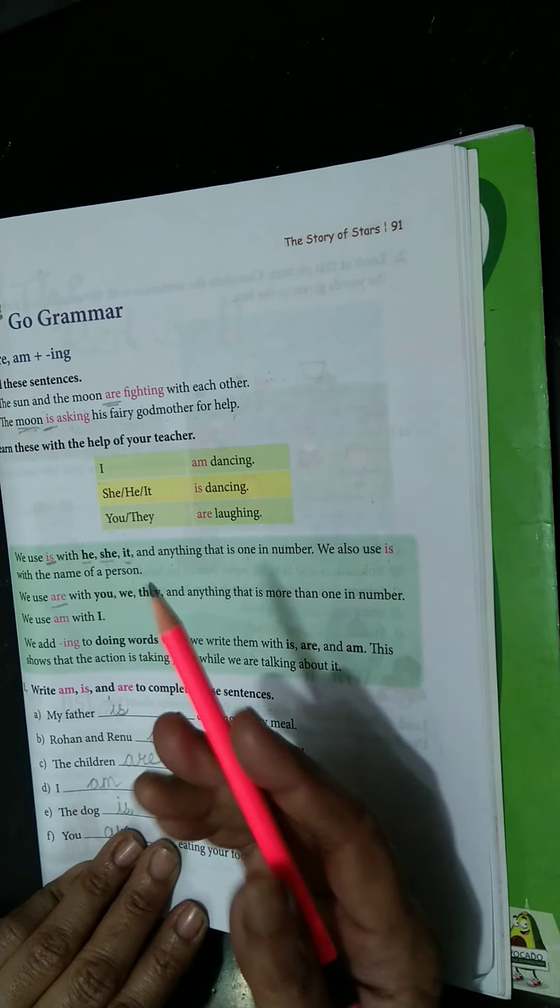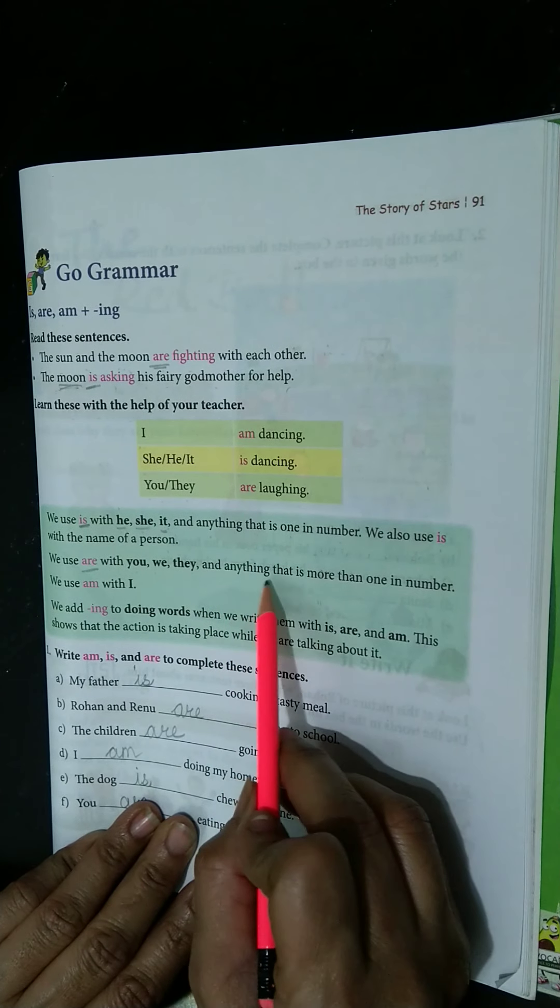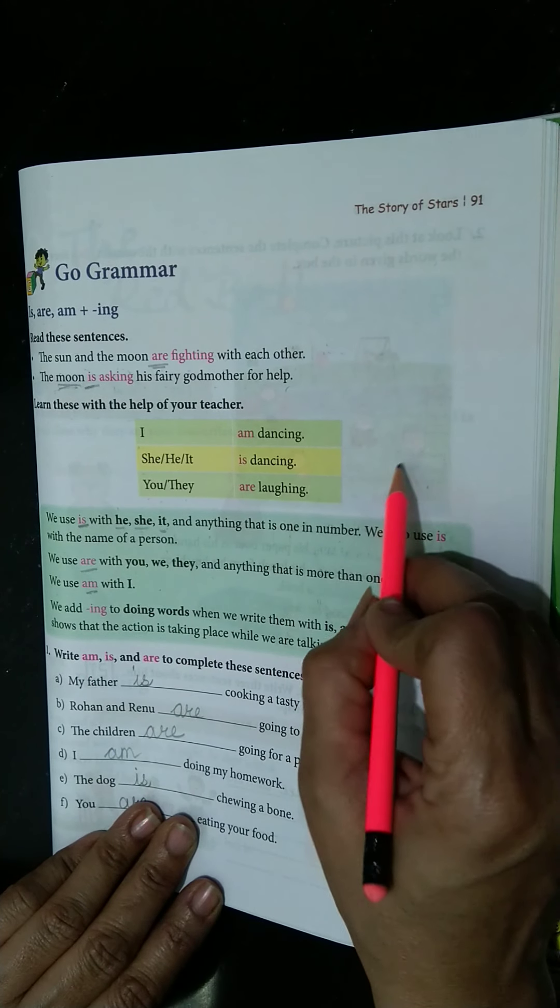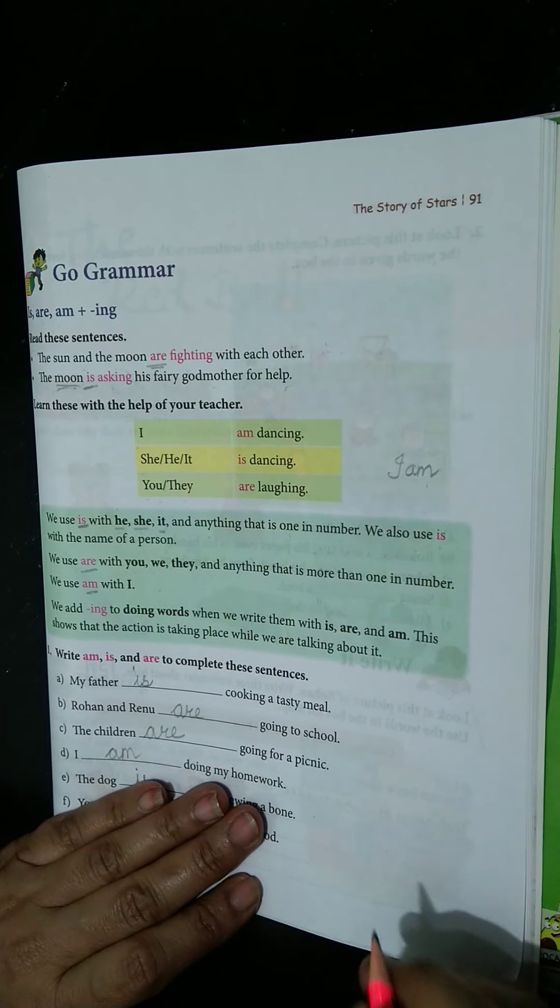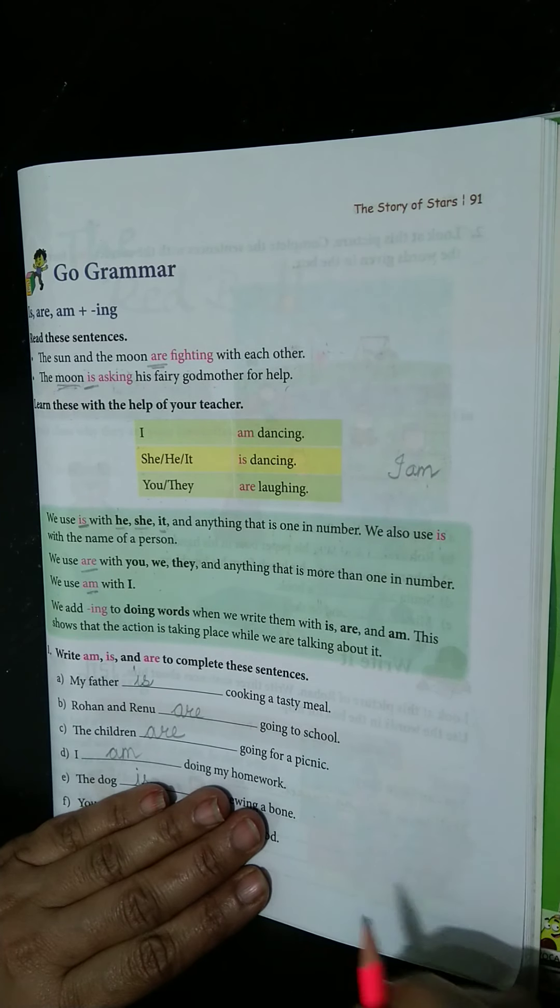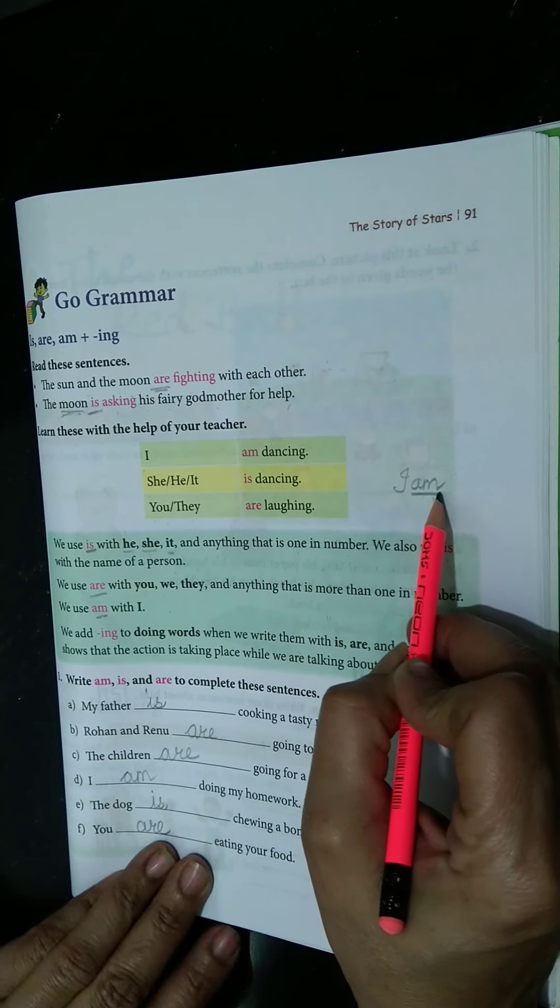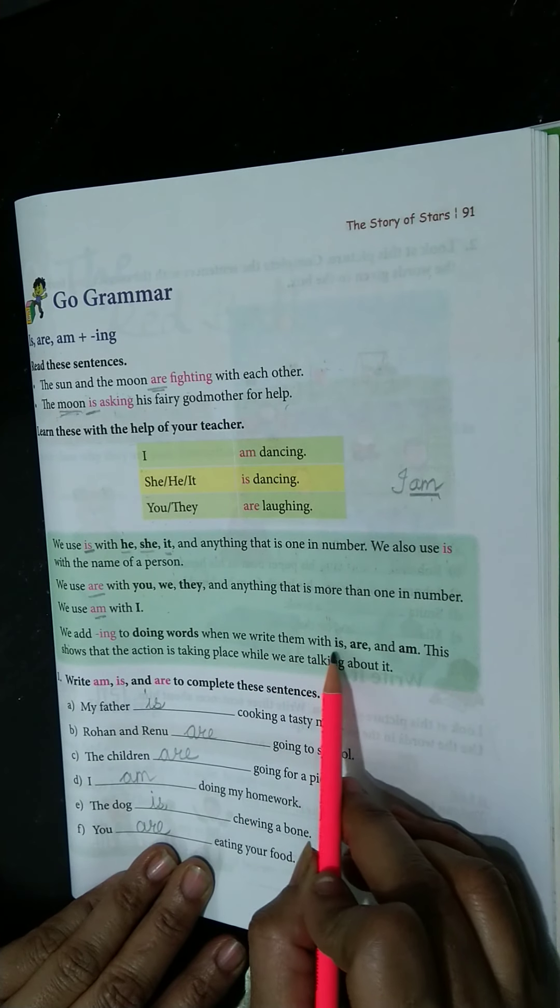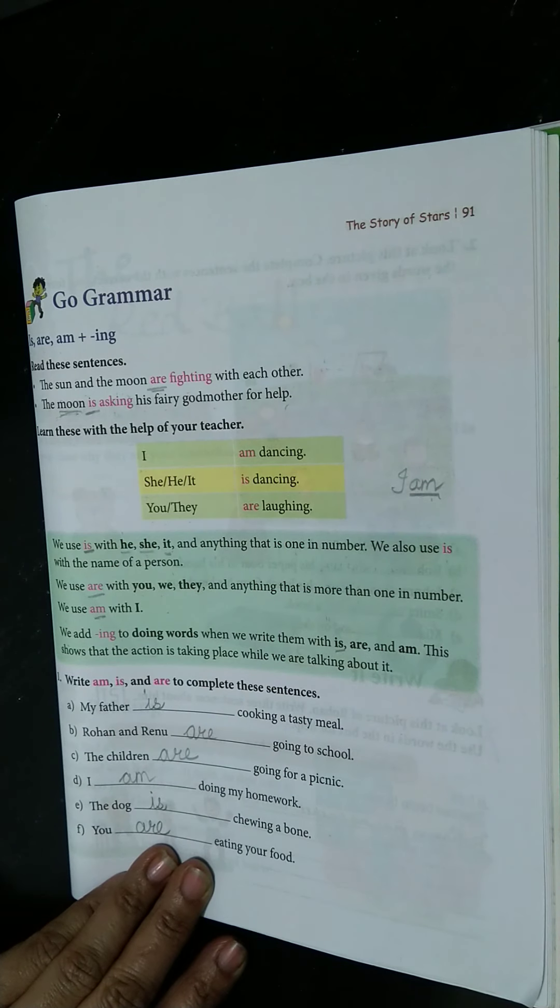Now we use are when more than one. You, but you are playing. They are dancing, we are dancing, and anything that is more than one number. We use am. Am is used always with I. I am studying, I am sleeping, I am eating, I am dancing, I am sitting, I am writing, I am reading, I am watching TV. With I, always am will come.